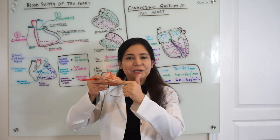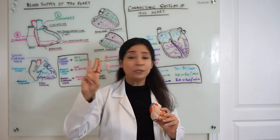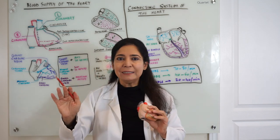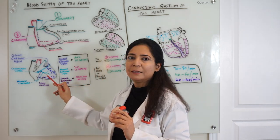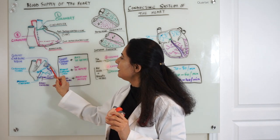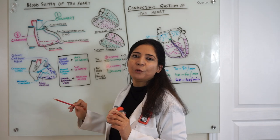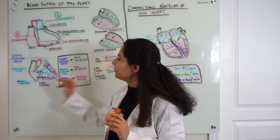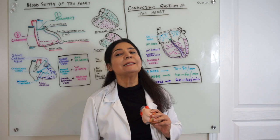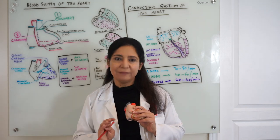These three major veins ultimately dump their deoxygenated blood into the coronary sinus. The great cardiac vein opens at the beginning of the coronary sinus, the middle cardiac vein opens into the coronary sinus, and the small cardiac vein drains into the coronary sinus. Finally, the coronary sinus opens into the right atrial cavity just beside the tricuspid valve.